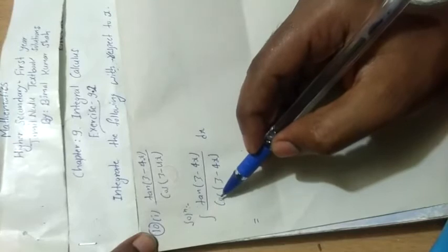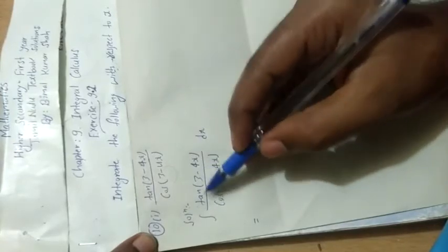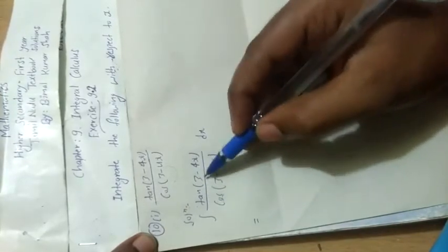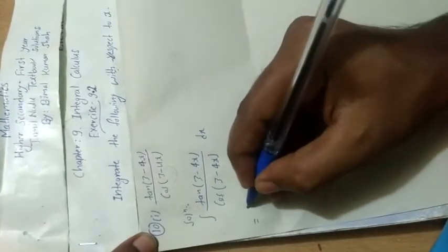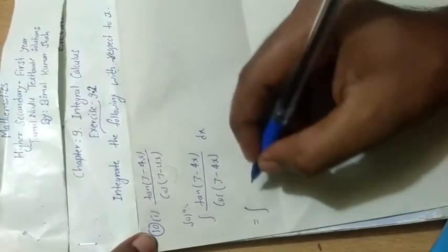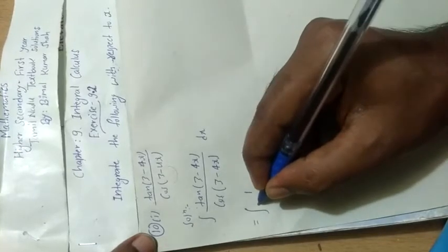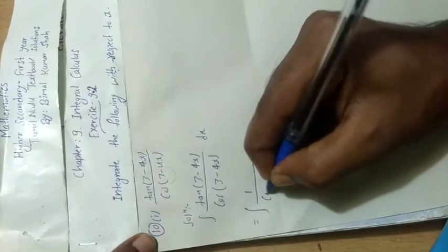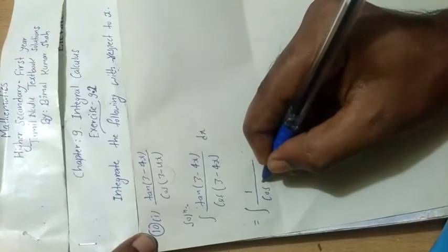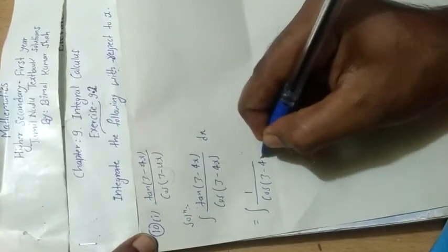This is equal to, now you can see 1 by cos is equal to sec, sec into tan, okay. So we have a standard formula for sec and tan, so we have to change it like this one. This is the accepted form.